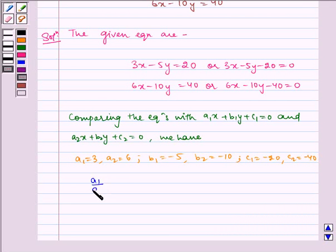Now, a1 by a2 equals 3 by 6 which equals 1 by 2, b1 by b2 equals minus 5 by minus 10 which equals 1 by 2, and c1 by c2 equals minus 20 by minus 40 which equals 1 by 2.